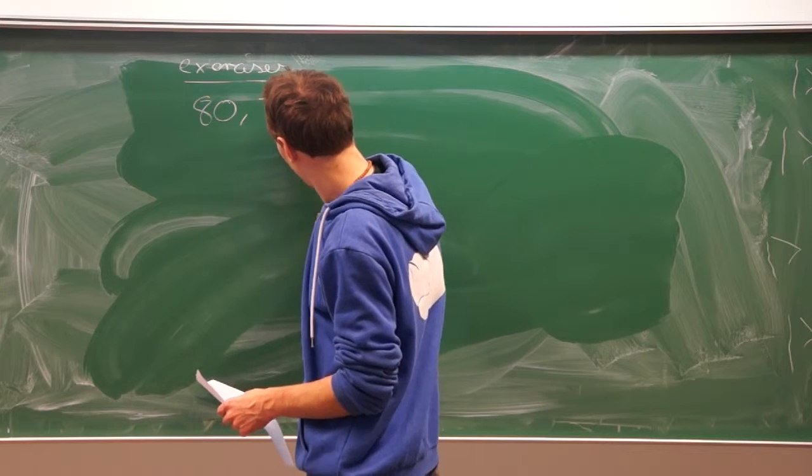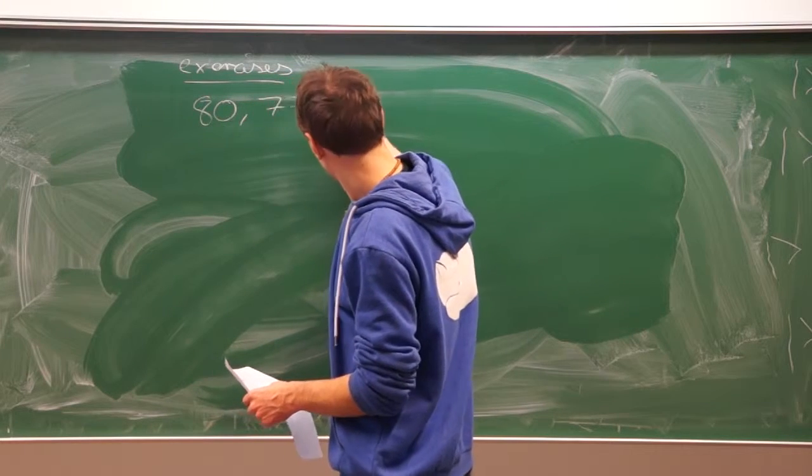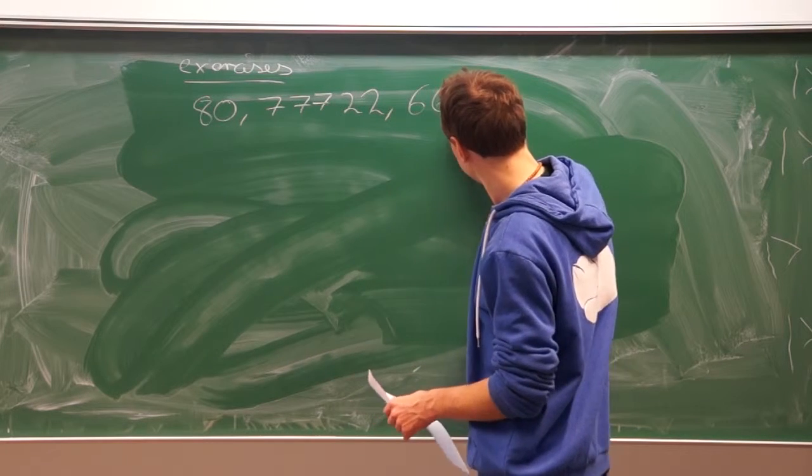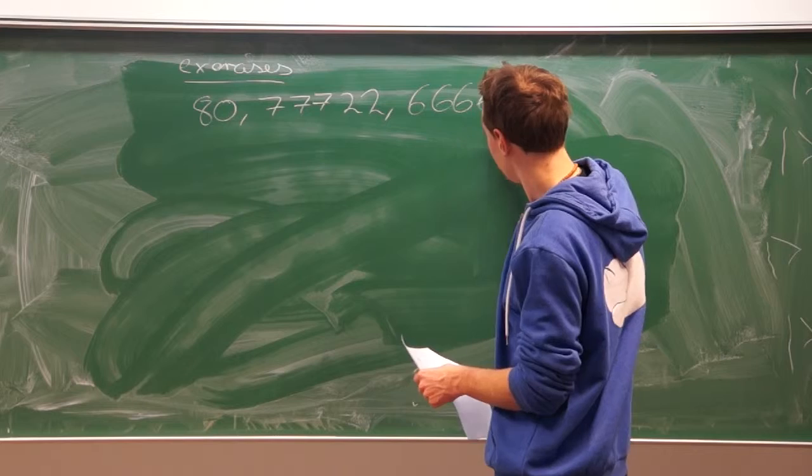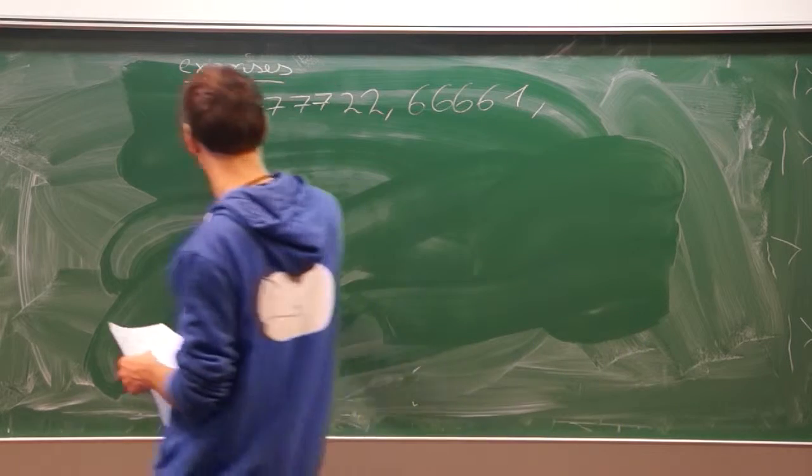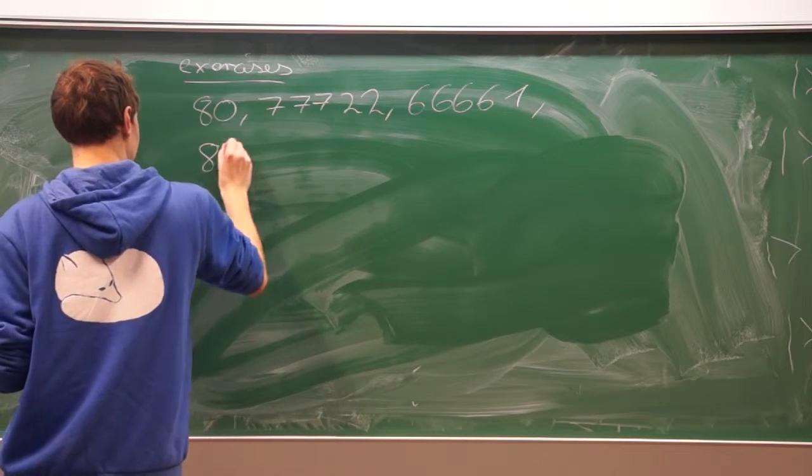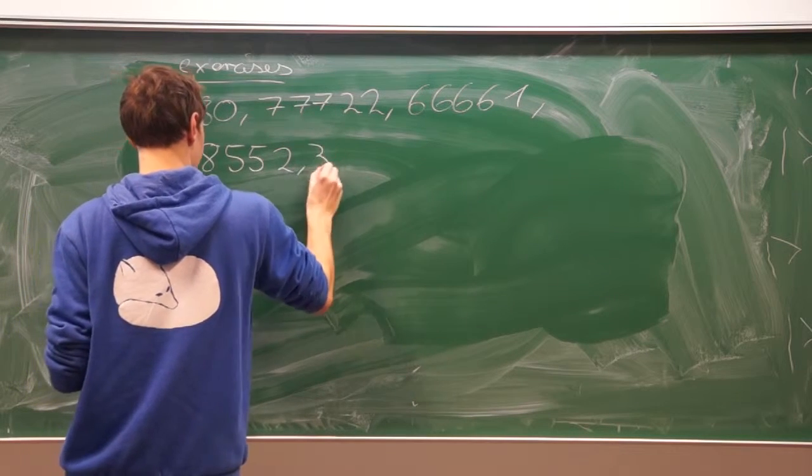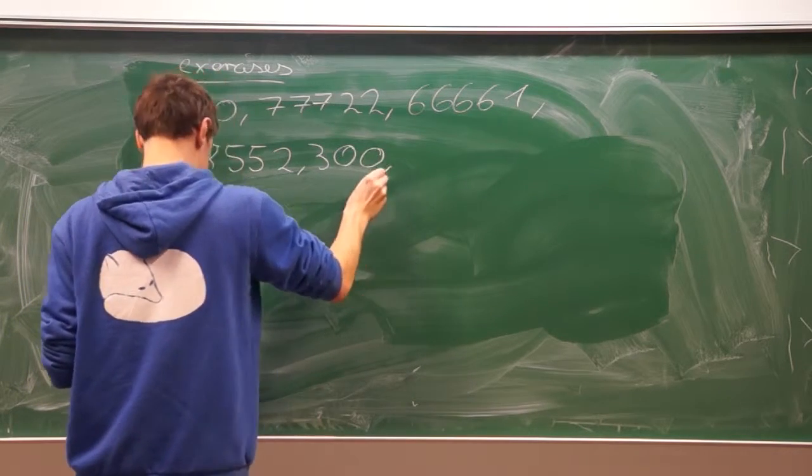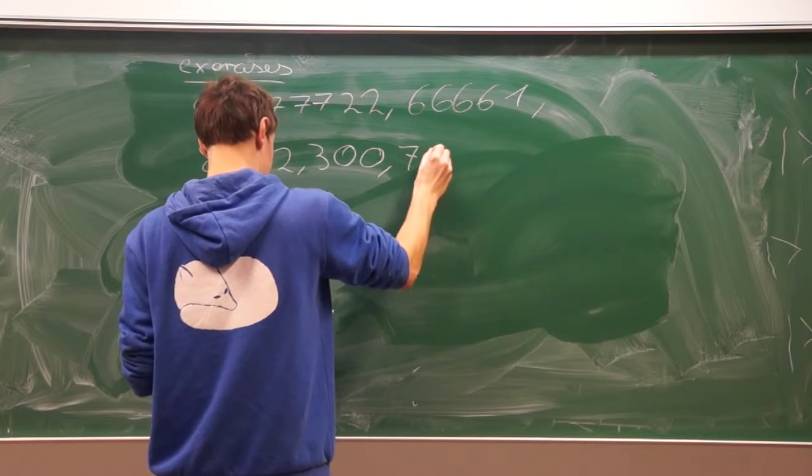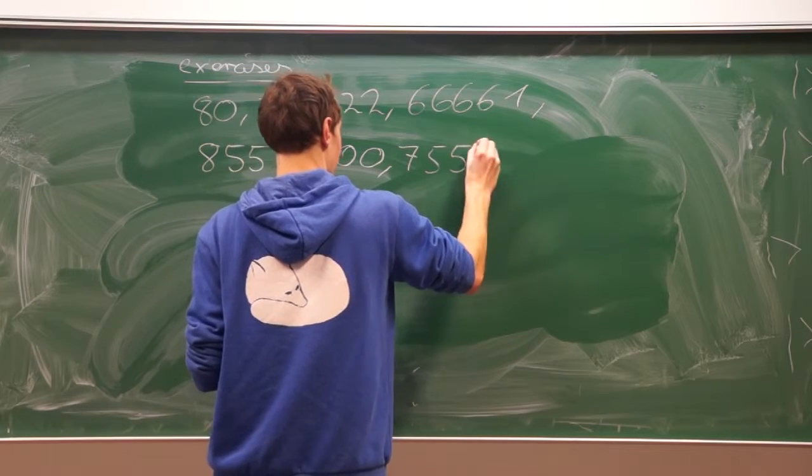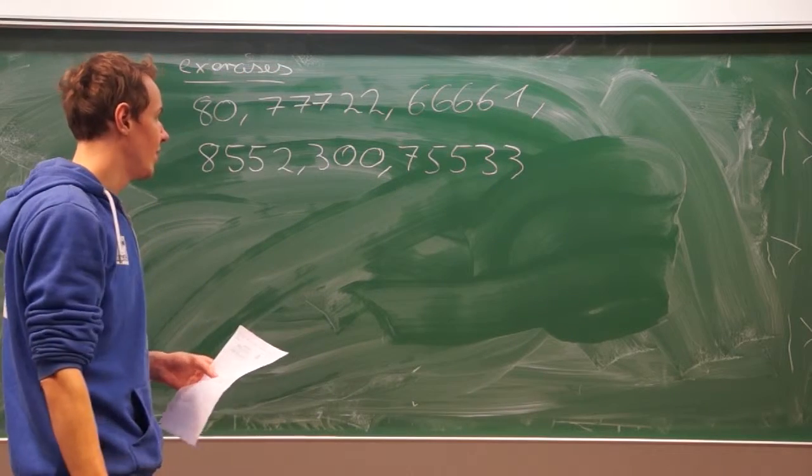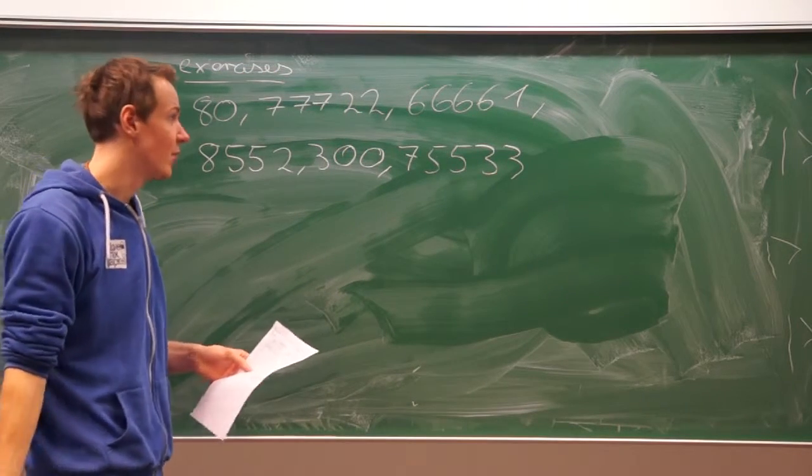This one, this one, this one. Okay, close to that: eight, five, five, two, three, zero, zero, and seven, five, five, three, three. And you should apply rule number two to them and see if it's correct or not.